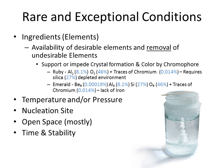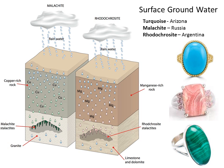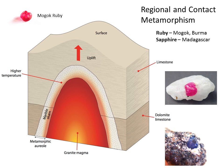One simple formation example is surface groundwater percolation. Rainwater percolates into the ground, becomes very acidic, and can dissolve many minerals it couldn't absorb at the surface. If it comes across copper-rich rocks, it absorbs those minerals and in crevices can grow malachite. If it encounters magnesium, it can grow rhodochrosite stalactites.